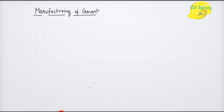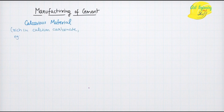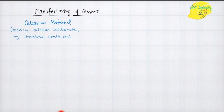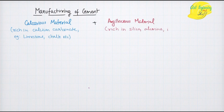Let us discuss the manufacturing of cement. When a calcareous material — calcareous materials are the materials that are rich in calcium carbonate — is mixed with an argillaceous material, such as limestone or chalk as examples of calcareous materials...